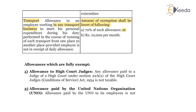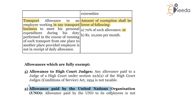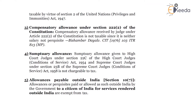Now, the allowances which are fully exempt — let us discuss them one by one. Allowance to High Court judges: the allowance paid to a judge of a High Court under section 22A(2) of the High Court (Conditions of Service) Act 1954 is not taxable and is fully exempt. Allowance paid by the United Nations Organization to its employees is not taxable by virtue of section 2 of the United Nations (Privileges and Immunities) Act 1947.